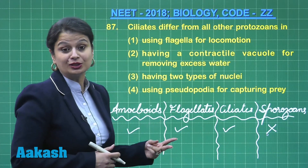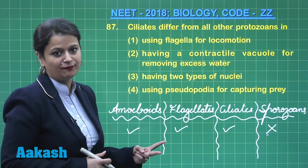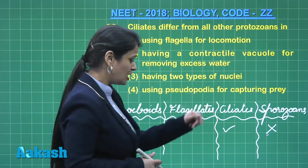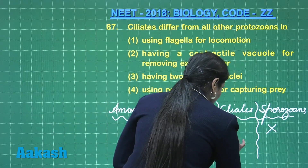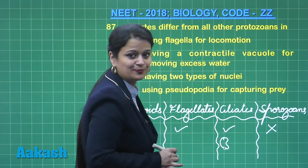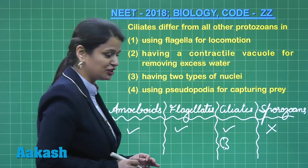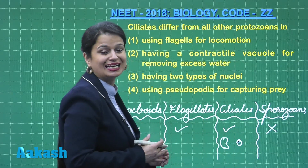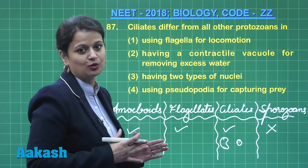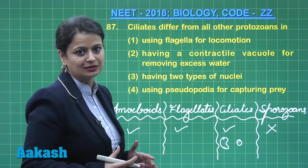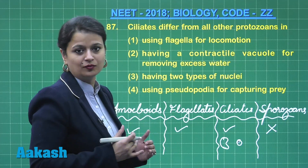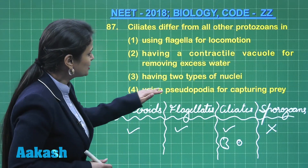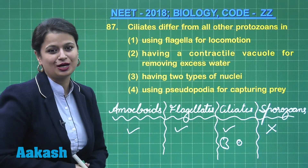Having two types of nuclei — a dimorphic condition with respect to nuclei — is only present in ciliates. The larger nucleus is known as the macronucleus, also called the vegetative nucleus, and the smaller nucleus is known as the micronucleus. It is reproductive in nature, taking part in all activities involved in reproduction.